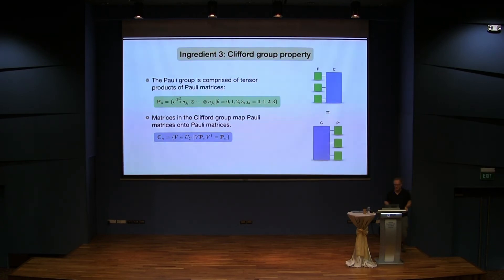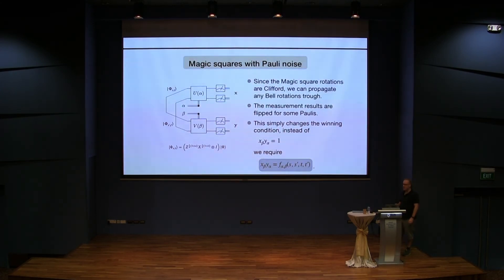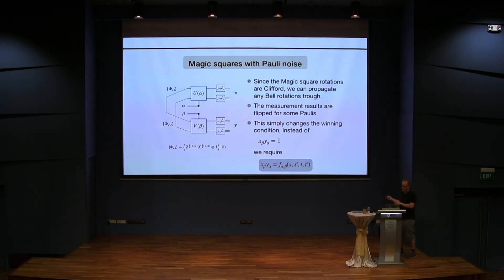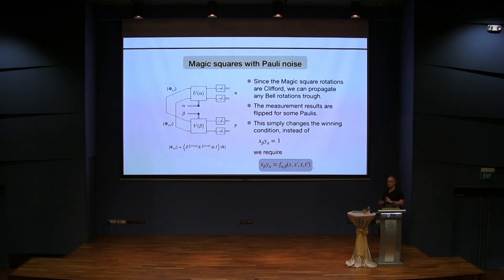If you have some Pauli operations applied before a Clifford circuit, you can compute the set of Pauli gates to be applied after the Clifford circuit such that these two things are the same. This is a very useful property, and in this particular case it tells us that we don't really need to do these Pauli rotations on the state — we instead can just compute what their effect would be on our output. Since everything is Clifford, we can commute it through, and once we do the measurement, we just need to check whether we did a bit flip before the measurement. If we did a bit flip before, we just have to invert our measurement output.